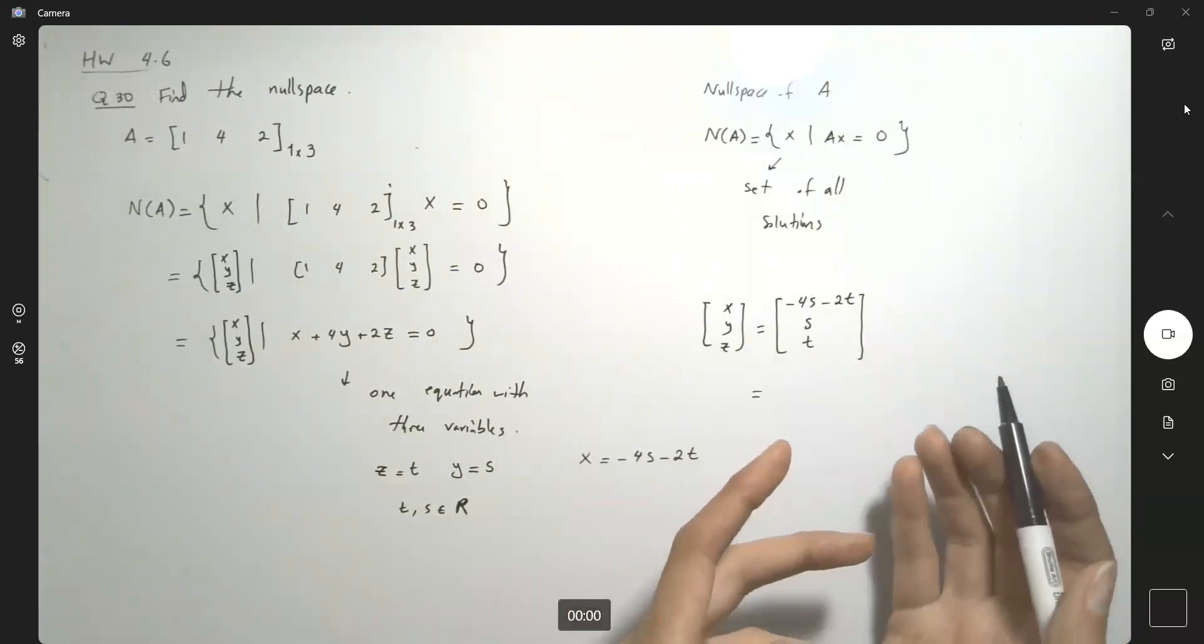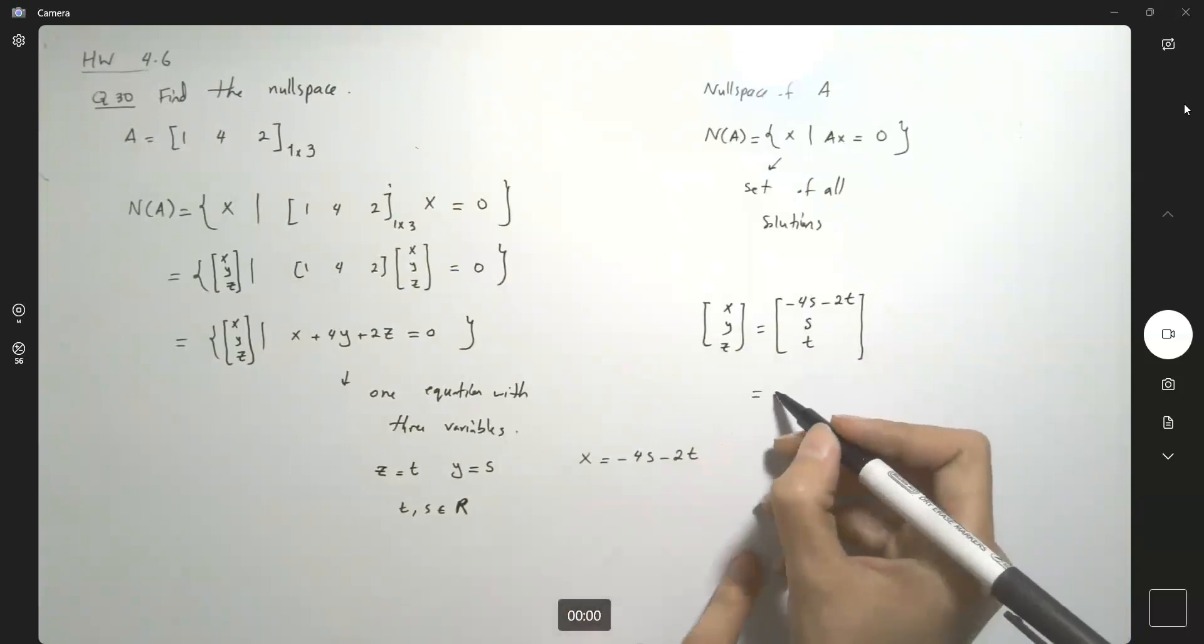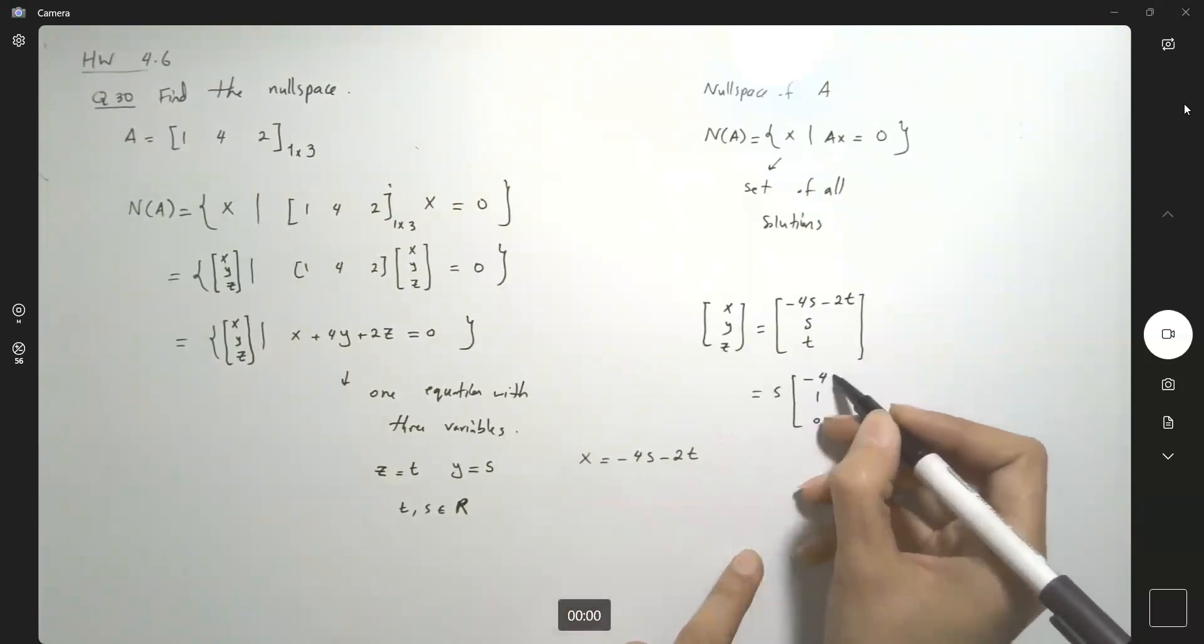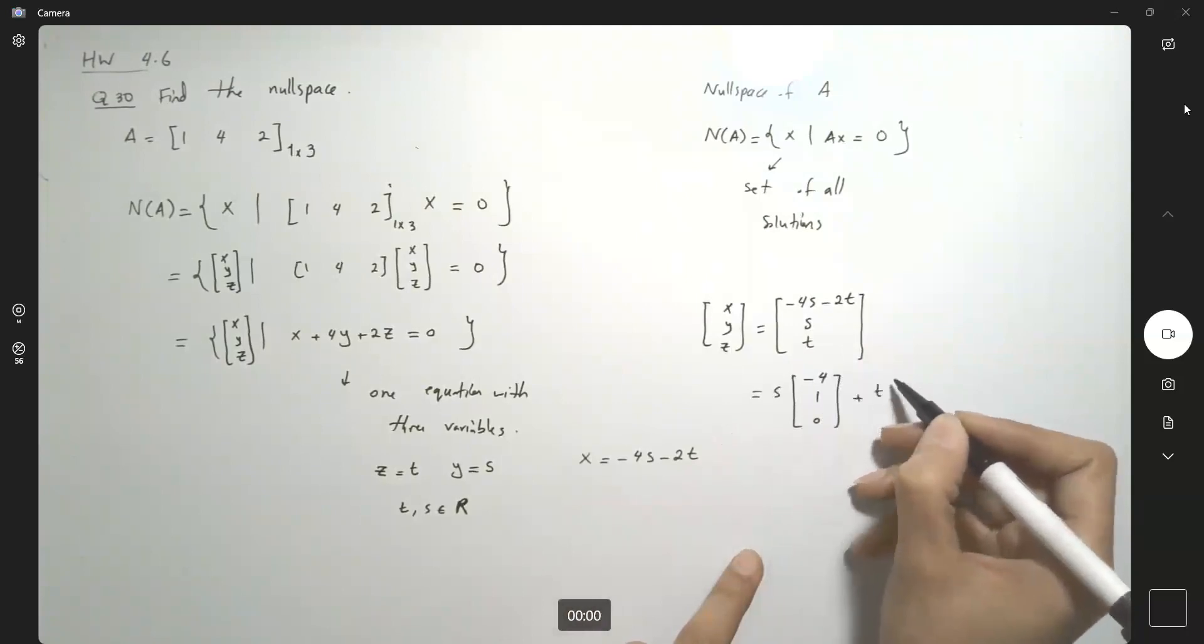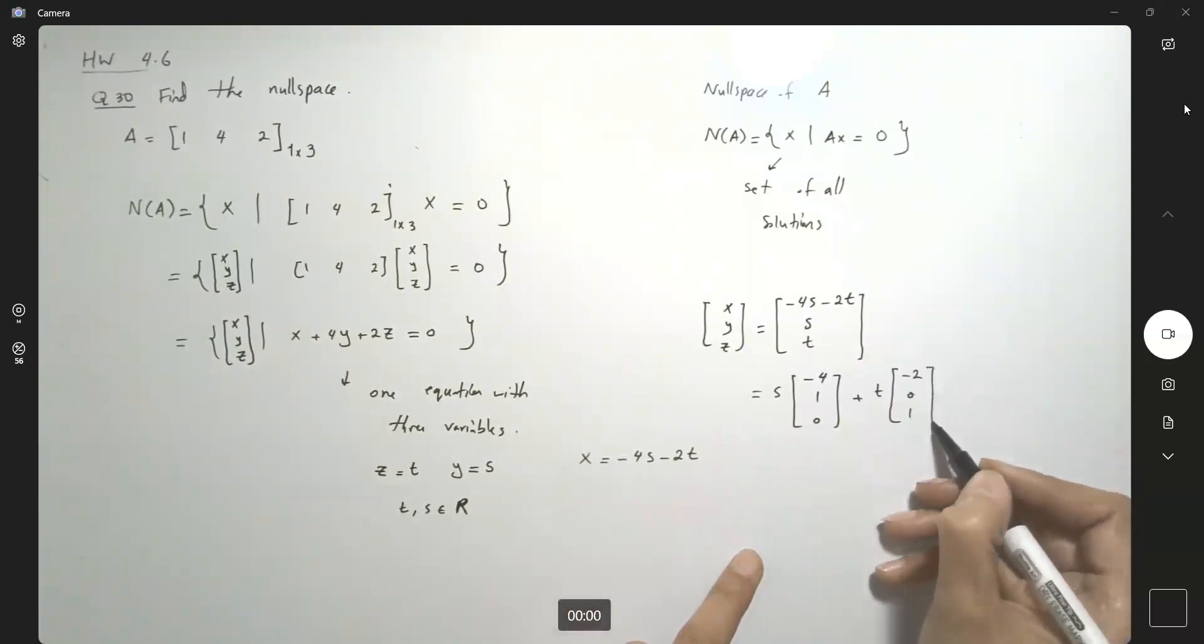So basically you can separate this as s times (-4, 1, 0) plus t times (-2, 0, 1).